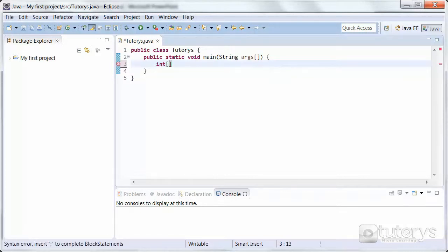Like so. And then we'll call our array an array, just for this example. So we've declared an array, type int, and we've named it an array.